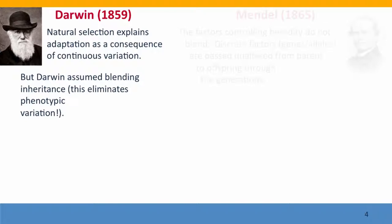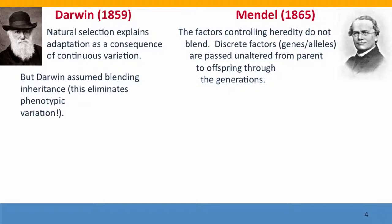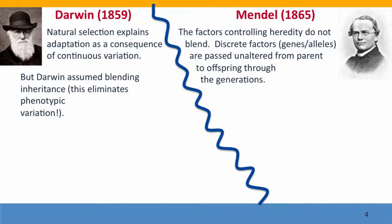At the same time, the problem posed by blending inheritance was being solved, although no one realized it at the time. It was being solved by Mendel, the first real geneticist. One extremely important finding that Mendel made was that the factors that control heredity do not blend. Discrete factors — what we now call alleles — are passed unaltered from parent to offspring through the generations. So you may inherit an allele that causes you to have, for instance, your grandfather's nose, even though neither of your parents displayed this trait.